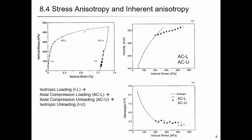When you look at the axial compression loading: up to a certain point you had the isotropic loading, then you have axial compression loading and axial compression unloading. The velocity still follows the same trend - loading and unloading curves collapse onto each other and match well. The damping behaves the same way.